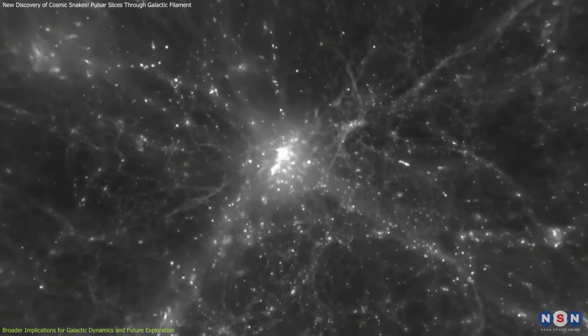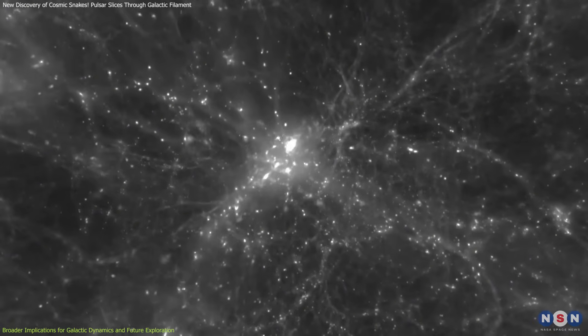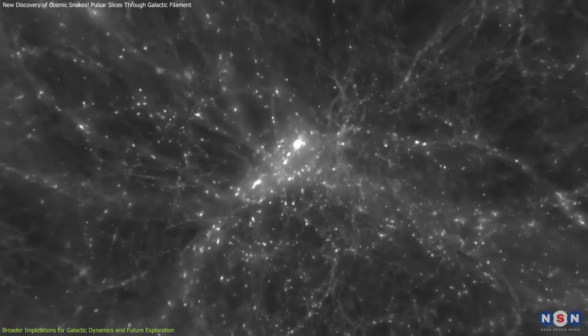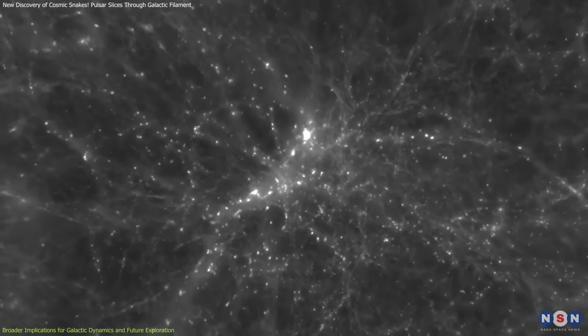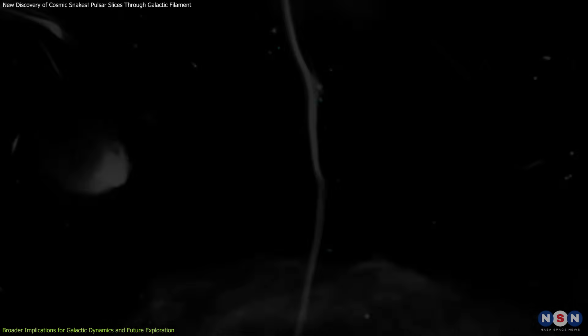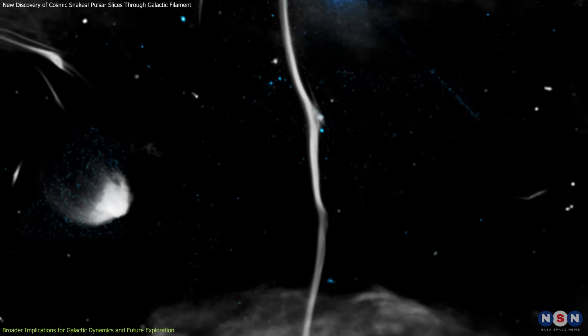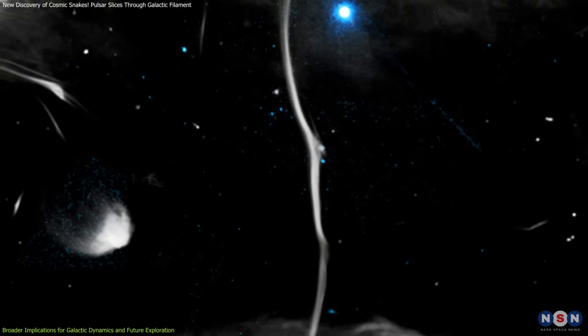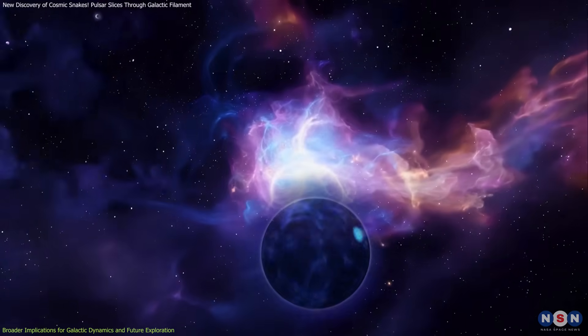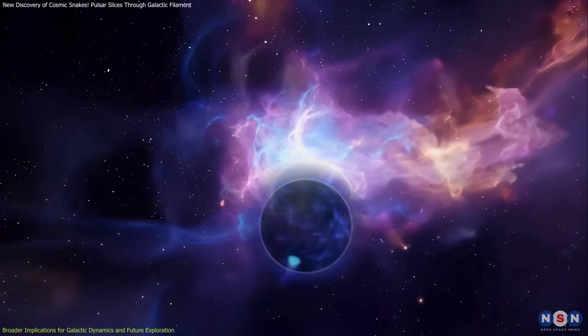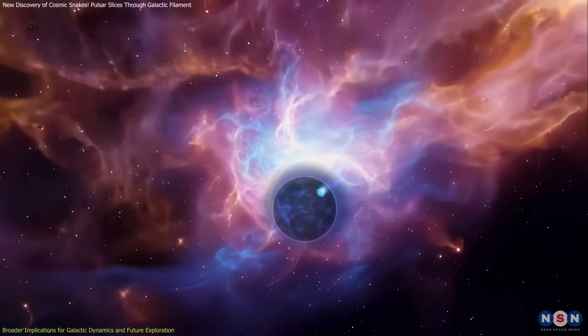Perhaps the most revolutionary insight is a paradigm shift. Galactic filaments are not static. They live, move, and interact. The Cosmic Snake is proof that massive cosmic structures are far from fragile. They respond to their environment. And in doing so, they rewrite the rules of galactic evolution.